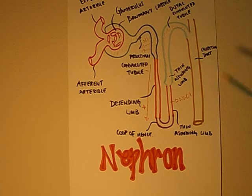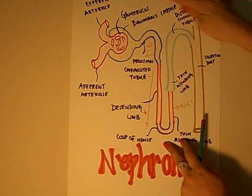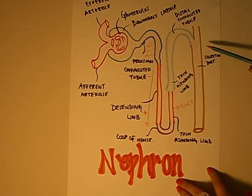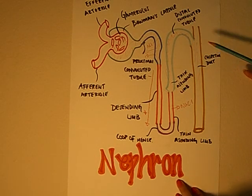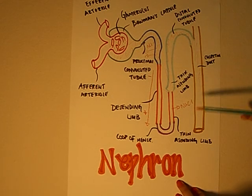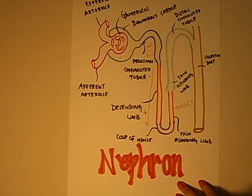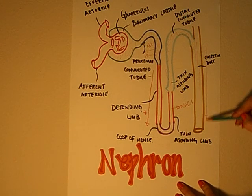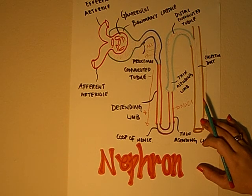The tubular fluid entering the collecting duct has the same concentration as the blood plasma. However, since sodium and chloride have been moved out, urea and other waste products make up a greater proportion of the total solute content. As the collecting duct descends from the cortex to the tip of the renal pyramid, the concentration gradient established by the loop of Henle increases. This increase in solute concentration causes more and more water to be absorbed from the fluid, thus concentrating the urine in the collecting duct.